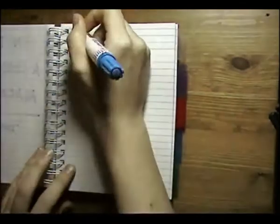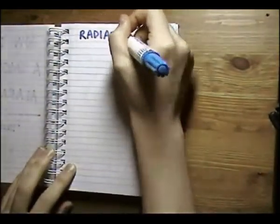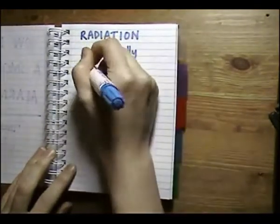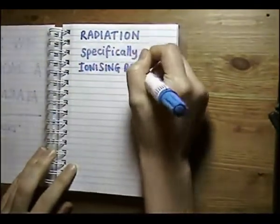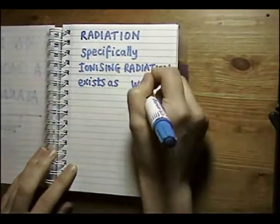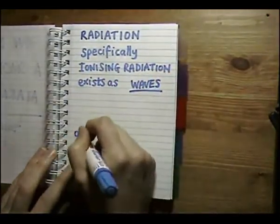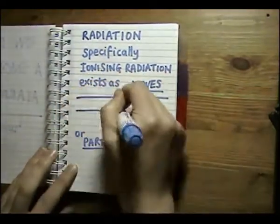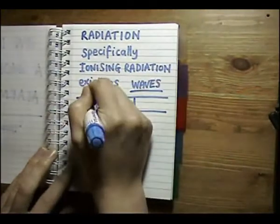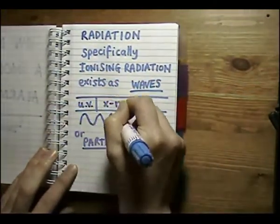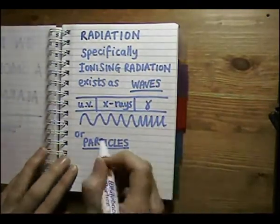To understand what's happening in this little box, we first need to know a thing or two about — you guessed it — radiation. We can think of radiation as a type of energy that is released in the form of waves or particles. Ionising radiation can be from waves in the electromagnetic spectrum: ultraviolet, x-rays, and gamma waves. Or particles: beta and alpha.